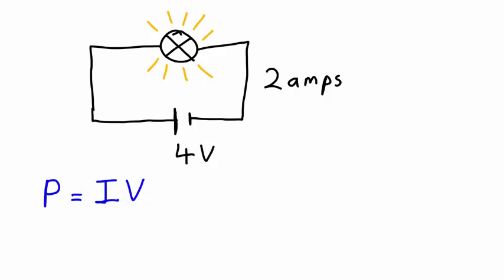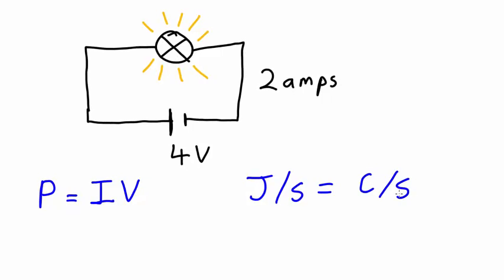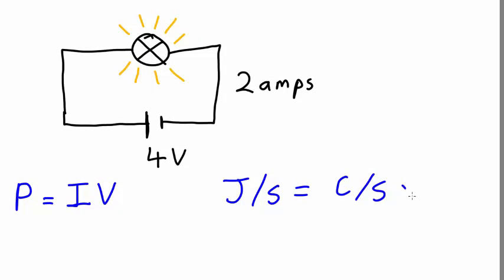If we think about the units, this makes sense because power is in joules per second, current is in coulombs per second, and voltage is joules per coulomb. We can see that joules per second equals coulombs per second times joules per coulomb.